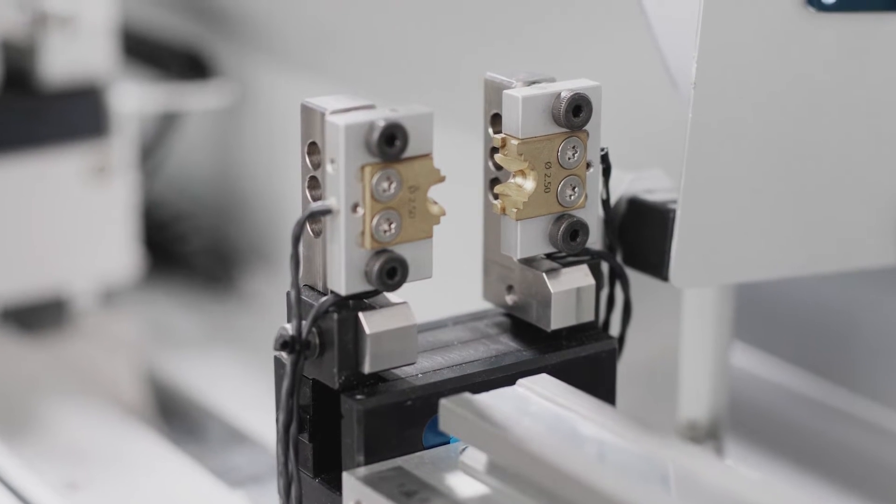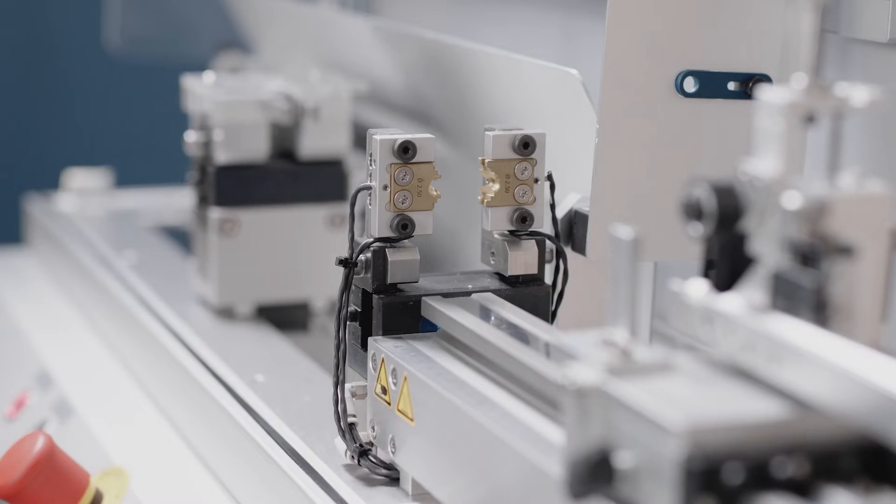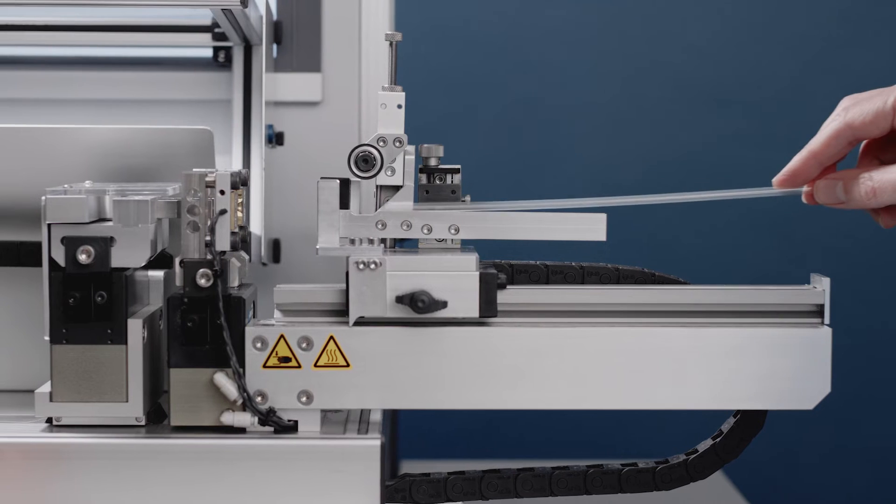The custom-sized die ensures a defined neck on the parison. The die is split into two parts to enable easy loading. The tube is pulled through the heated die and reduced to a defined diameter.